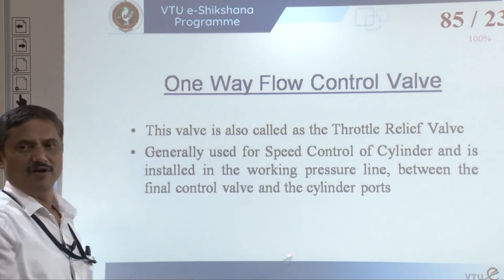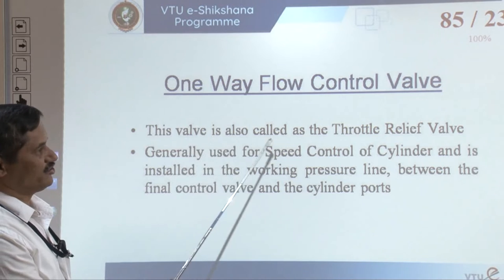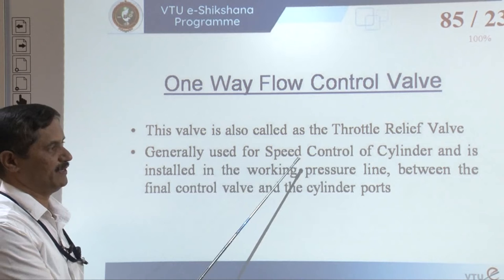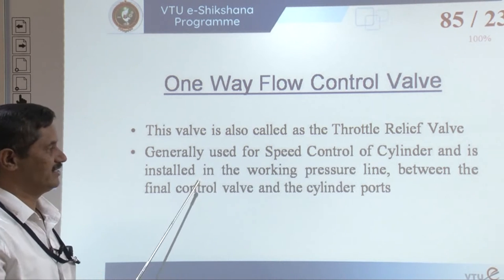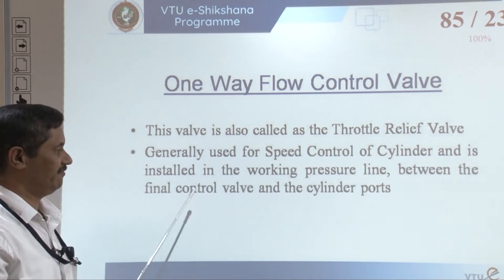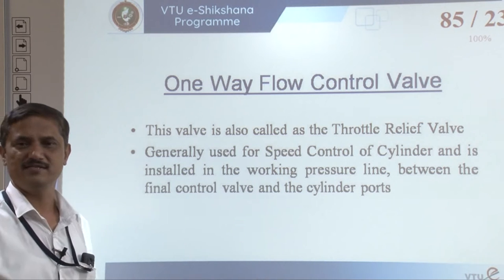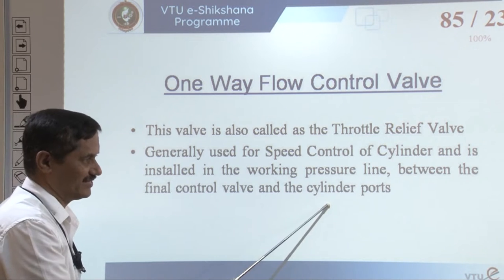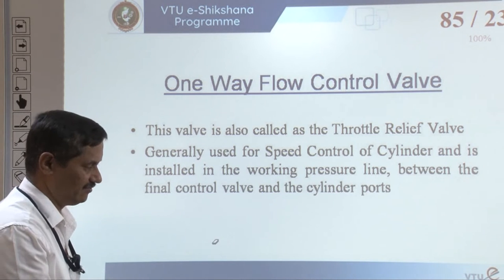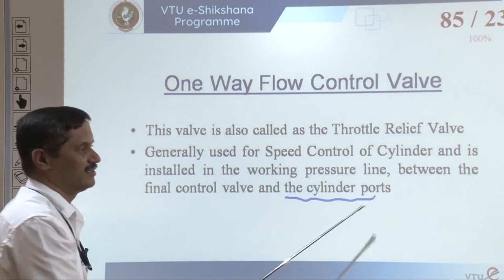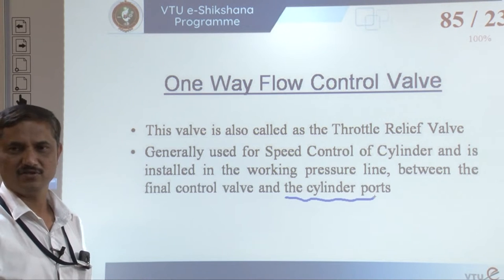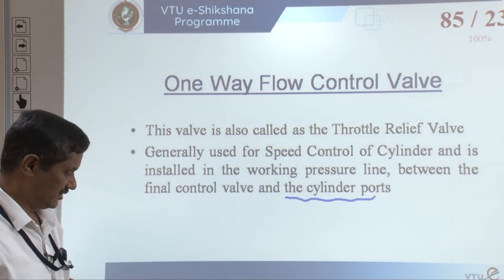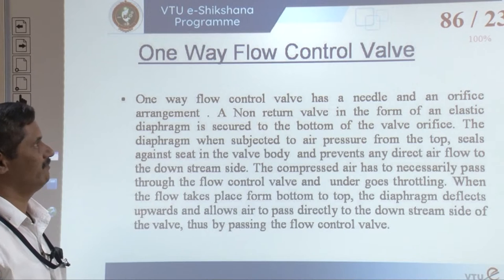If you take a one-way flow control valve, this valve is also called a throttle relief valve. It is generally used for speed control of the cylinder and is installed in the working pressure lines between the final control valve and the cylinder port. Normally it is kept very close to the cylinder ports — that is, near the actuator. This is the way the installation of these valves is made.